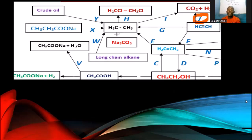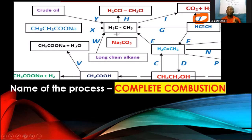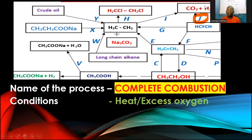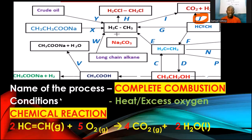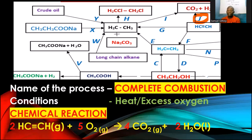Process J — ethene also undergoing complete combustion to form CO₂ and water. This requires a large amount of oxygen. Unsaturated hydrocarbons generally burn with a yellow flame, but with sufficient oxygen, they undergo complete combustion producing CO₂ and water.